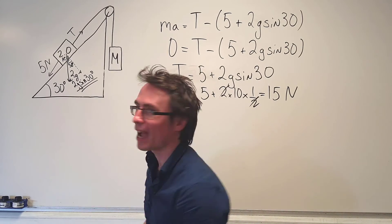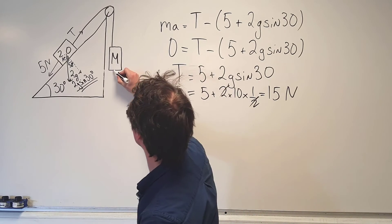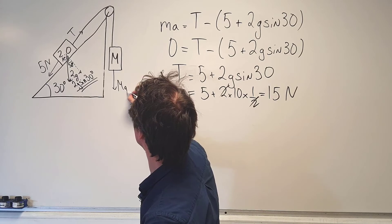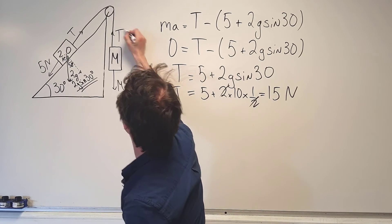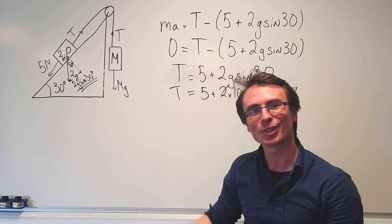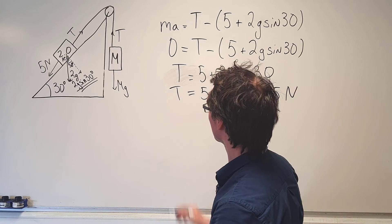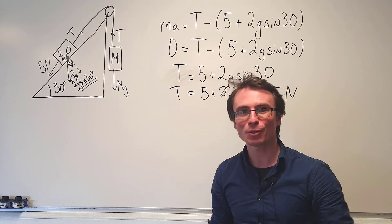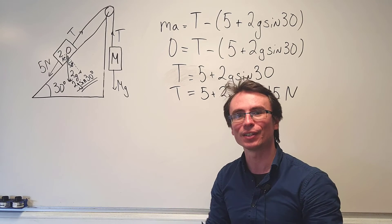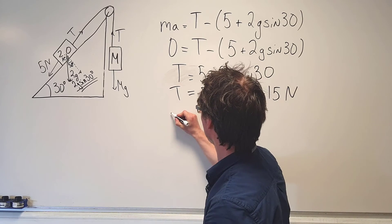So for this one we only have two forces which are acting. Of course we've got mg acting downwards and we've got the force of tension which is acting upwards, and this mass will also be moving at a constant velocity meaning the acceleration is zero.